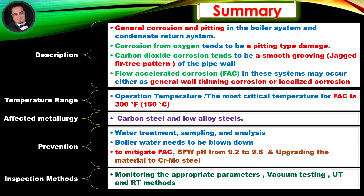Temperature range: the most critical temperature for flow accelerated corrosion is 300 degrees Fahrenheit. Affected metallurgy: carbon steel and low alloy steels. Prevention: water treatment, sampling, and analysis. Boiler water needs to be blown down to mitigate flow accelerated corrosion. BFW pH from 9.2 to 9.6 and upgrading the material to chromium molybdenum steel are recommended.